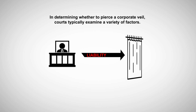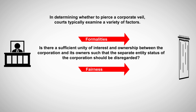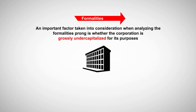Some states have developed a two-prong test. The prongs are called the formalities prong and the fairness prong, respectively. One: is there a sufficient unity of interest and ownership between the corporation and its owners such that the separate entity status of the corporation should be disregarded? And two: would it be inequitable to pierce the corporate veil? That's the fairness prong.